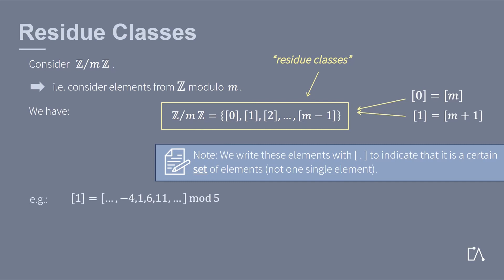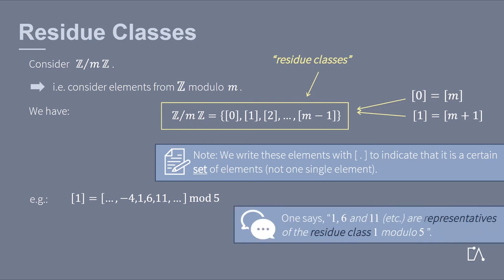For instance, the residue class of 1 modulo 5 contains also the minus 4, 6 and 11. Those values are all equal to 1 up to a multiple of 5. One says that 1, 6, and 11 are representatives of the residue class 1 modulo 5.